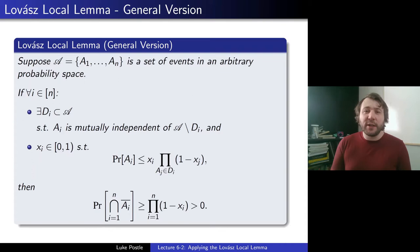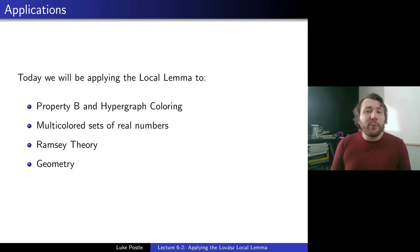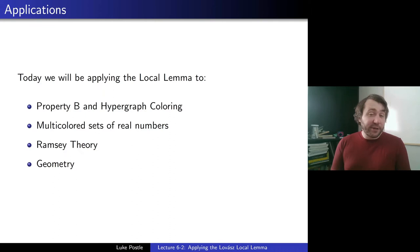We'll do a little bit with the general version today, mostly using the symmetric version. So today we'll be applying the Local Lemma to various problems. It has many applications; this is just a small sample. We'll be looking at property B in hypergraph coloring, multicolored sets of real numbers, Ramsey theory, and then we'll finish up with a result in geometry.